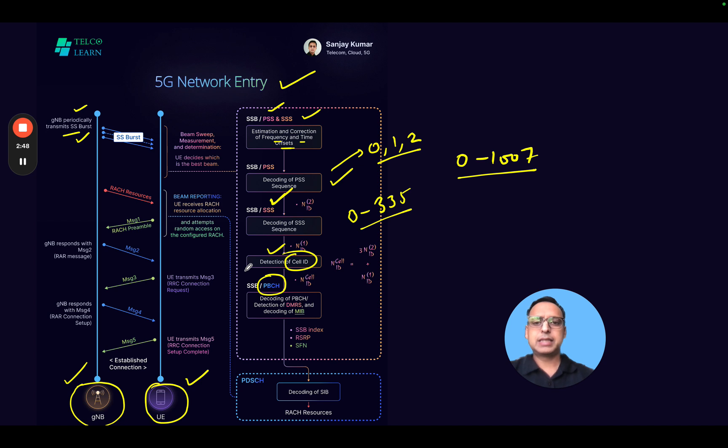After completing PSS and SSS decoding, the user moves on to decode the PBCH. The PBCH is the physical broadcast channel which typically contains the information called MIB or master information block, which is the required information to connect to the cell. It includes information like SSB index, RSRP values, the system frame number (SFN), along with some other values.